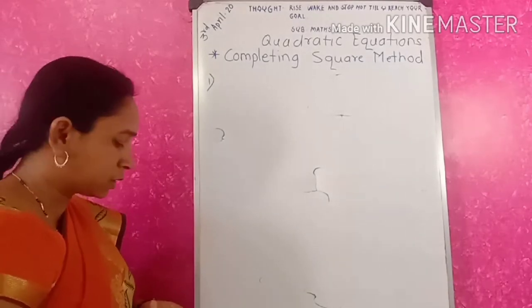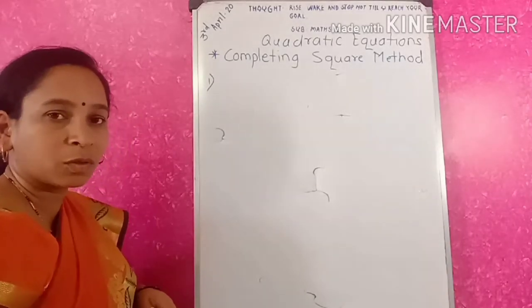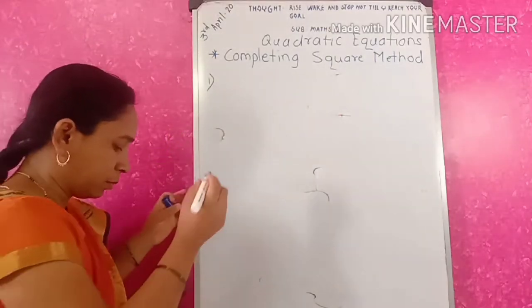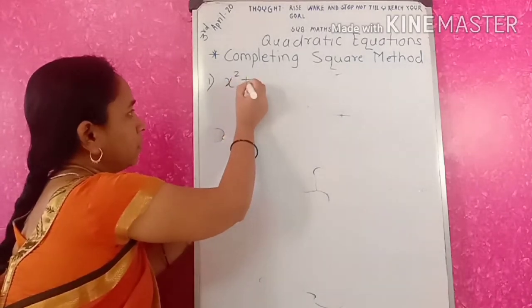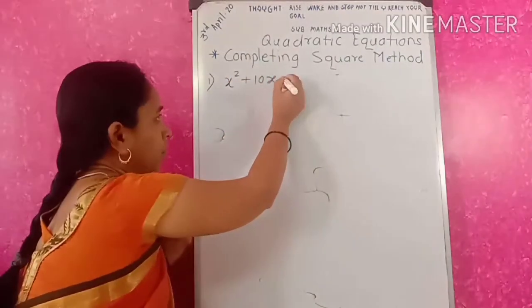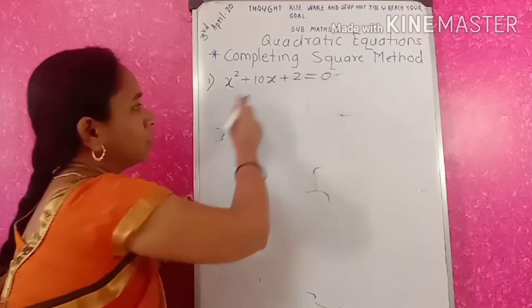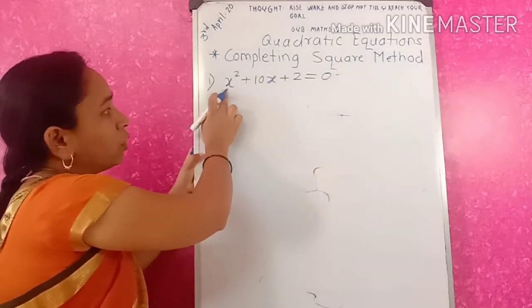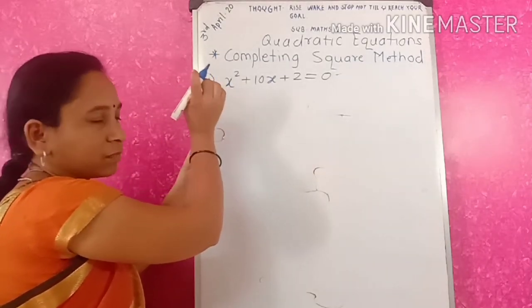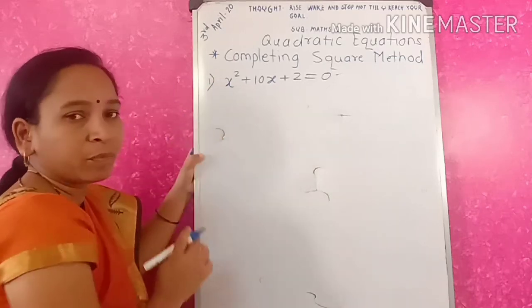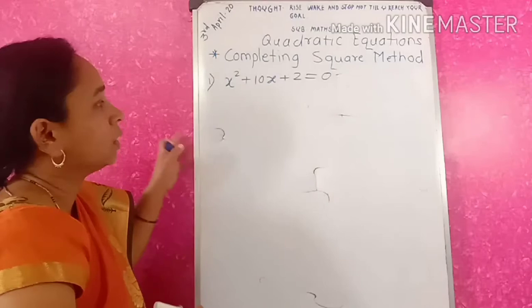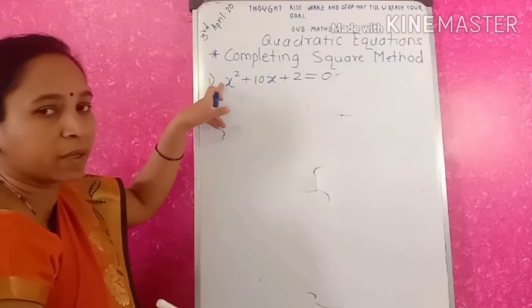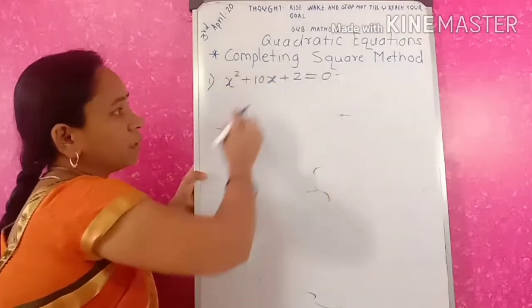Hello students, today we will discuss the next method to solve the quadratic equation: the completing square method. We will see the example x squared plus 10x plus 2 equals 0. To solve equations by the completing square method, we have to check the coefficient. The condition is that the coefficient of x squared should be 1. If the coefficient is not 1, we have to convert the equation so that it becomes 1. Now we will solve this equation by the completing square method.